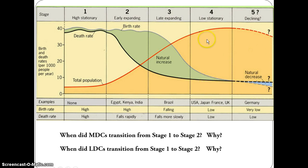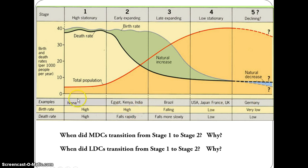This declining period may continue or may cycle back into Stage 4 if countries recognize the need to improve their birth rate. But then they could also move back into Stage 5 again. So it's likely there will be cycles between Stages 4 and 5. Keep in mind all of the countries that would be in each stage.